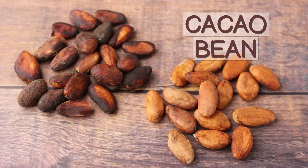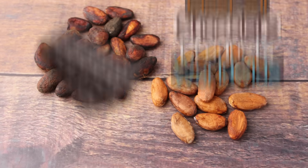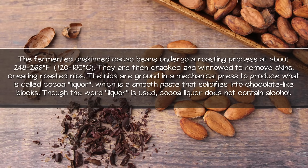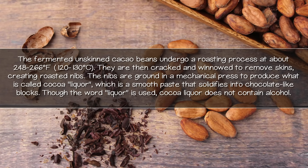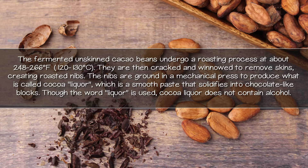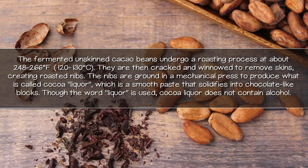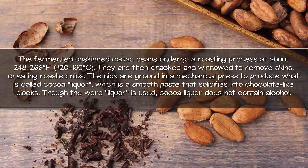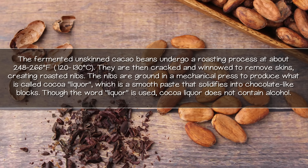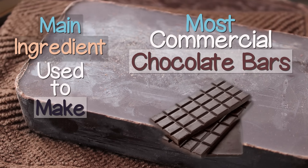Technically, the point at which a cacao bean becomes a cocoa bean is after it is roasted, which is a standard practice for making most all chocolate products worldwide. The fermented, unskinned cacao beans undergo a roasting process at about 248 to 266 degrees Fahrenheit. They are then cracked and winnowed to remove skins, creating roasted nibs. The nibs are ground in a mechanical press to produce what is called cocoa liquor, a paste that solidifies into chocolate-like blocks. Though the word liquor is used, cocoa liquor does not contain alcohol. Cocoa liquor is the main ingredient used to make most commercial chocolate bars.